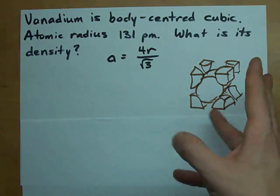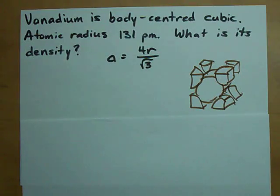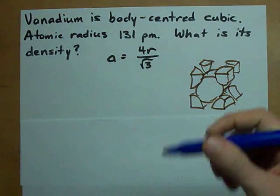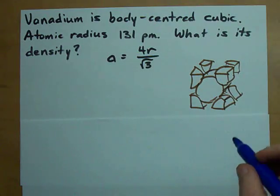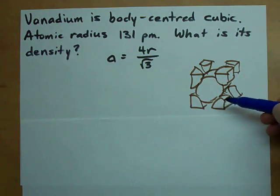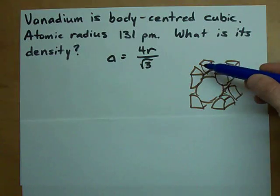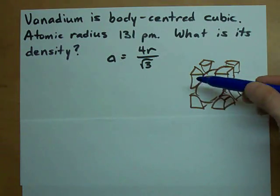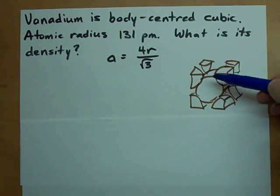This is my grotesque drawing of a body centered cubic, but the point that I'm trying to make here is that in each body centered cubic cell, there are 8 corners, each worth 1 eighth of an atom, and then one whole atom in the center.